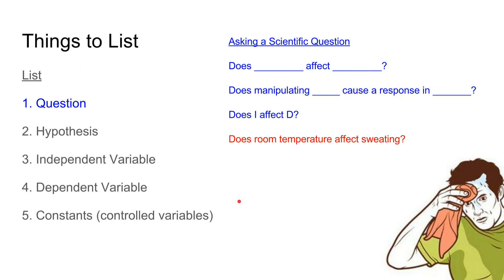The first thing to list is your scientific question. The easiest way to start right is to frame your question in this manner: 'Does I affect D?' — where the variables are embedded directly into the question. For example, 'Does room temperature affect sweating?' The thing that will be manipulated is room temperature, and sweating will respond to that. So we're measuring sweating in response to a change in room temperature.